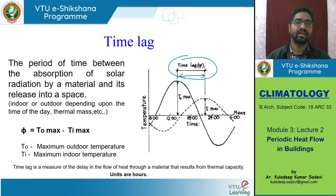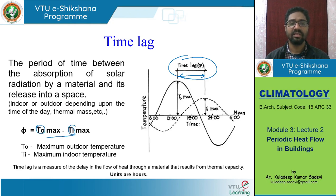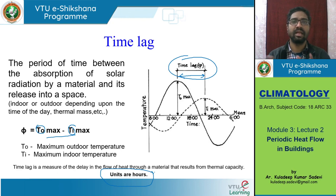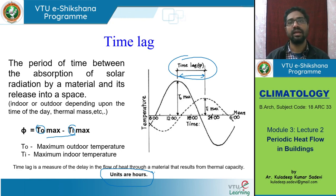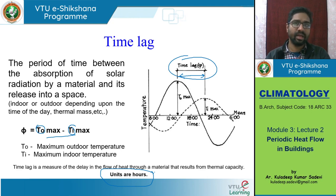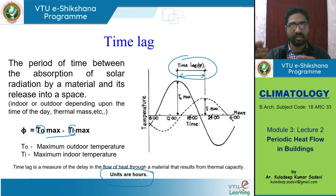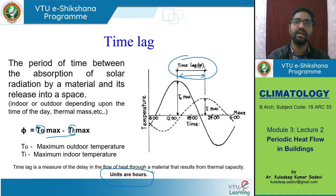Time lag is the period of time between the absorption of solar radiation by the material and its release into the space. The difference between the time of outdoor maximum and indoor maximum is what we calculate as time lag, measured in number of hours. For example, the time lag for a given wall might be six or seven hours. Time lag is not just a characteristic of a wall material alone — a nine-inch brick wall facing east may have a different time lag than the same nine-inch brick wall facing another direction, because of the varying rate of temperature rise and the time it takes for those temperatures to propagate indoors.